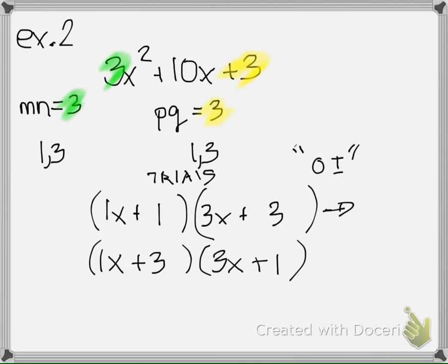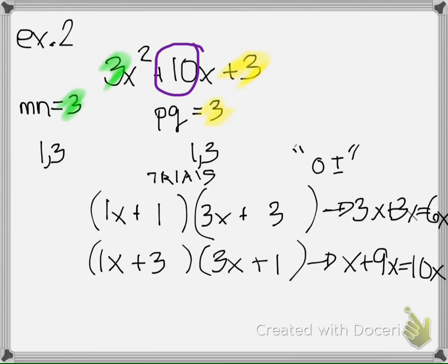The next step in the process is now to OI it. When I OI it, I get 3x plus 3x which gives me 6x. I OI the second one. I get 1x plus 9x gives me 10x. Which one is the one we want? Well, our b term is 10 and this one gives me a b term of 10 so this is my answer.